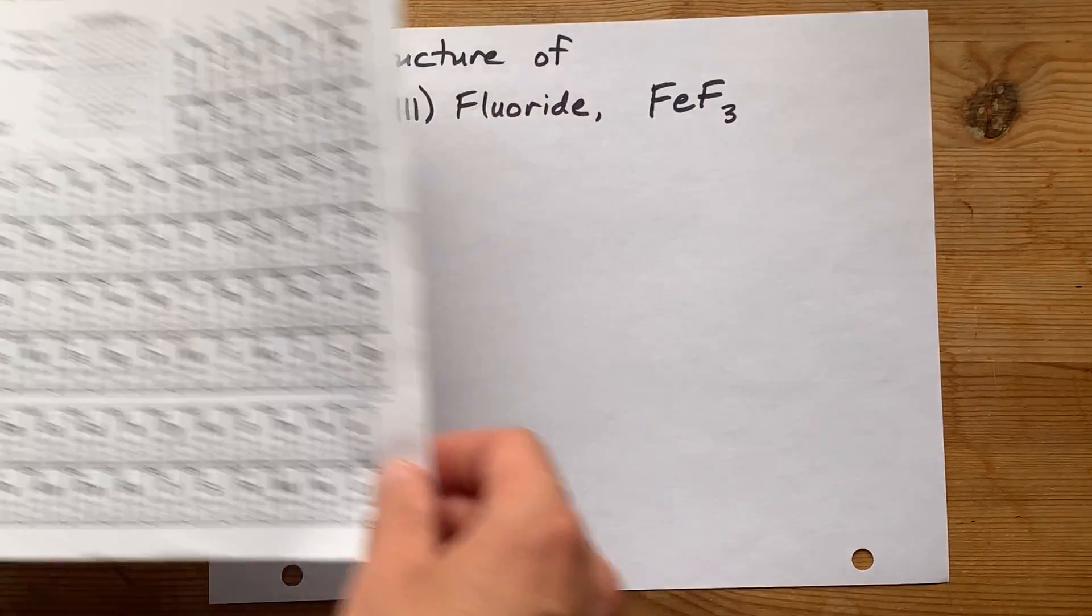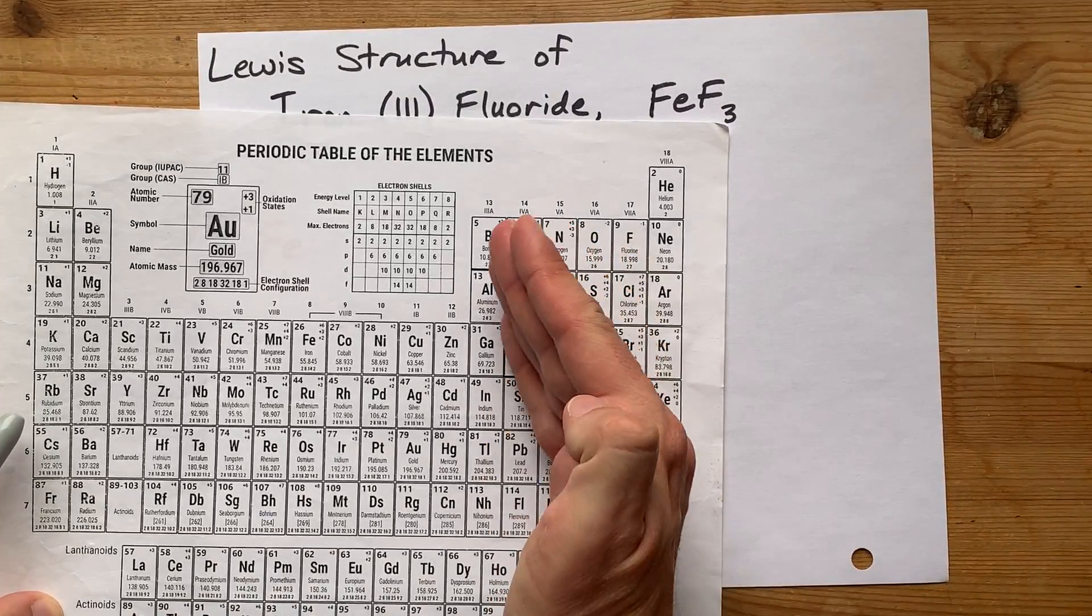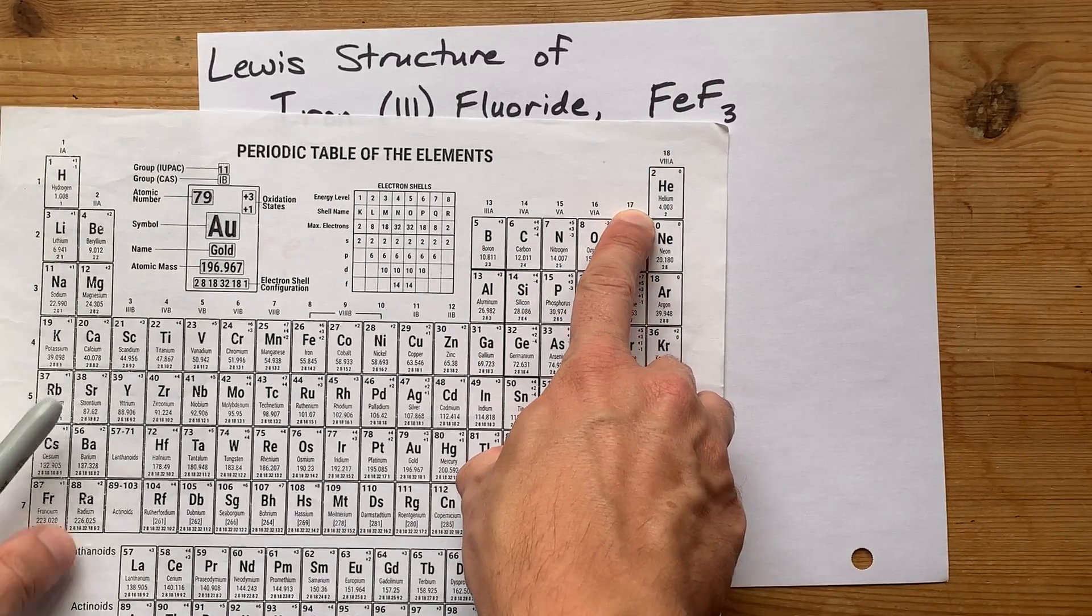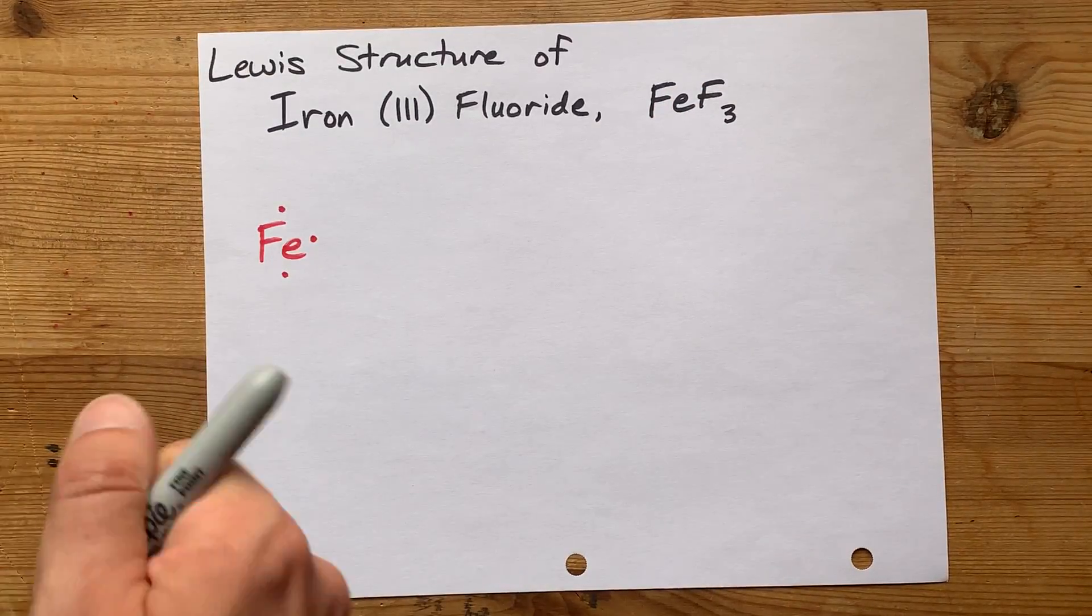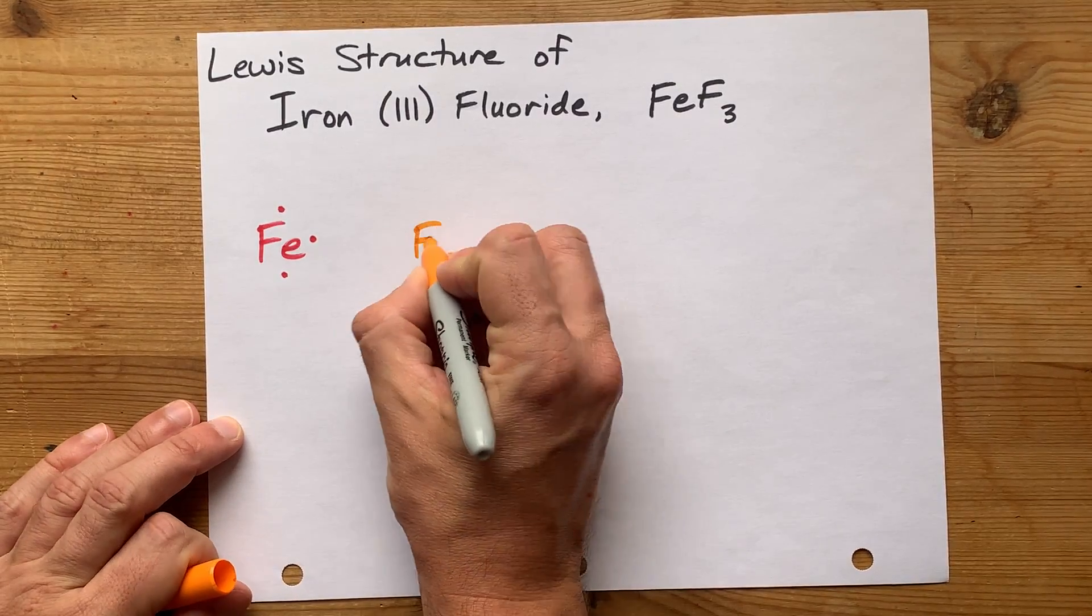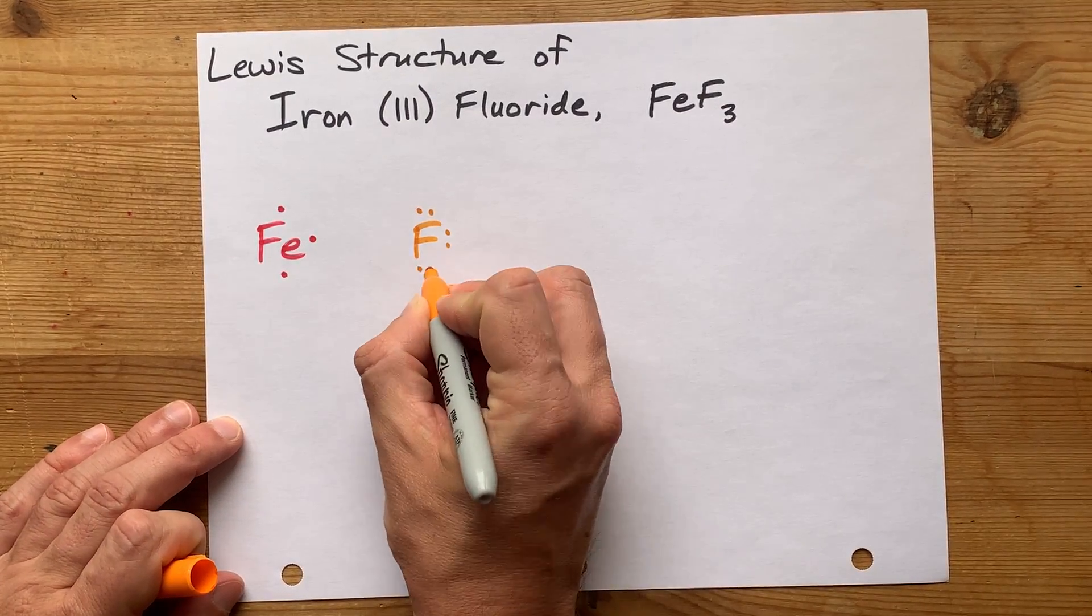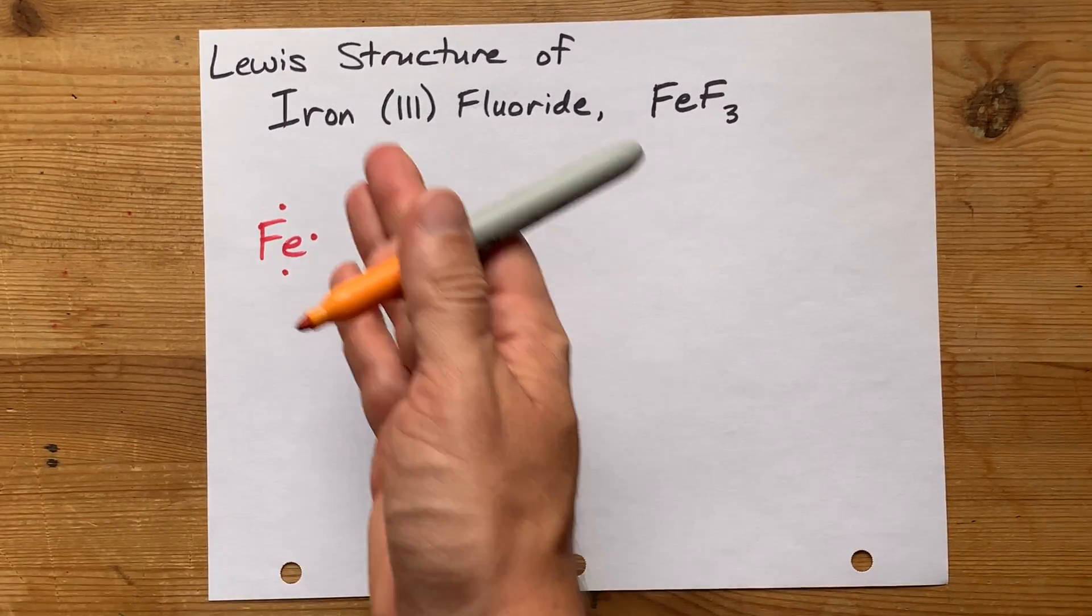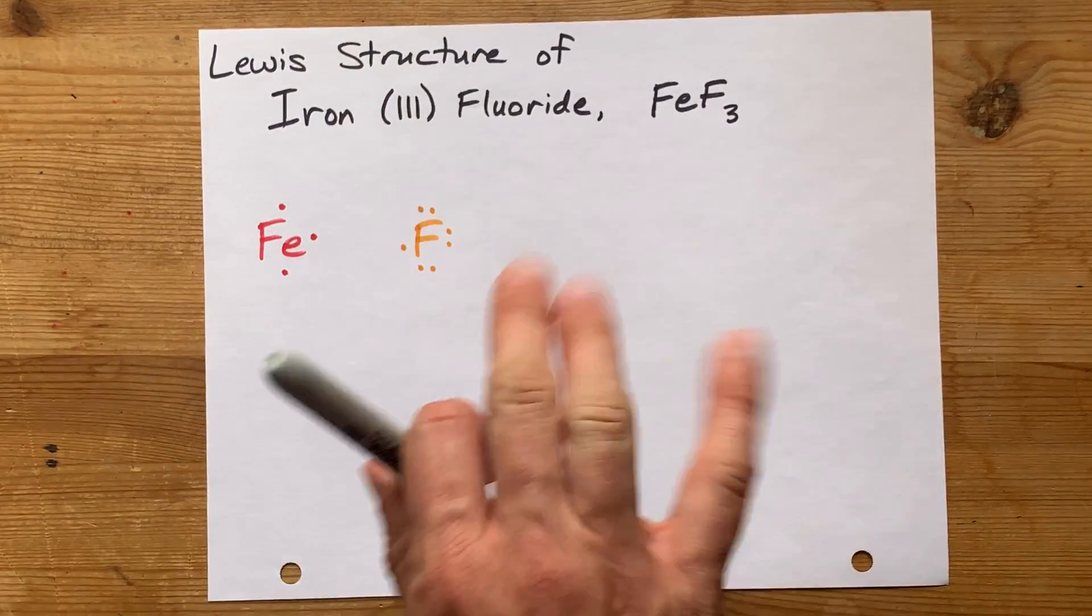Now, fluorine is a non-metal. It's from the right-hand side of that staircase, and it's in group 17, so I want you to draw it with seven valence electrons. There's your F, one, two, three, four, five, six, seven. That's the Lewis dot diagram for just a regular fluorine.